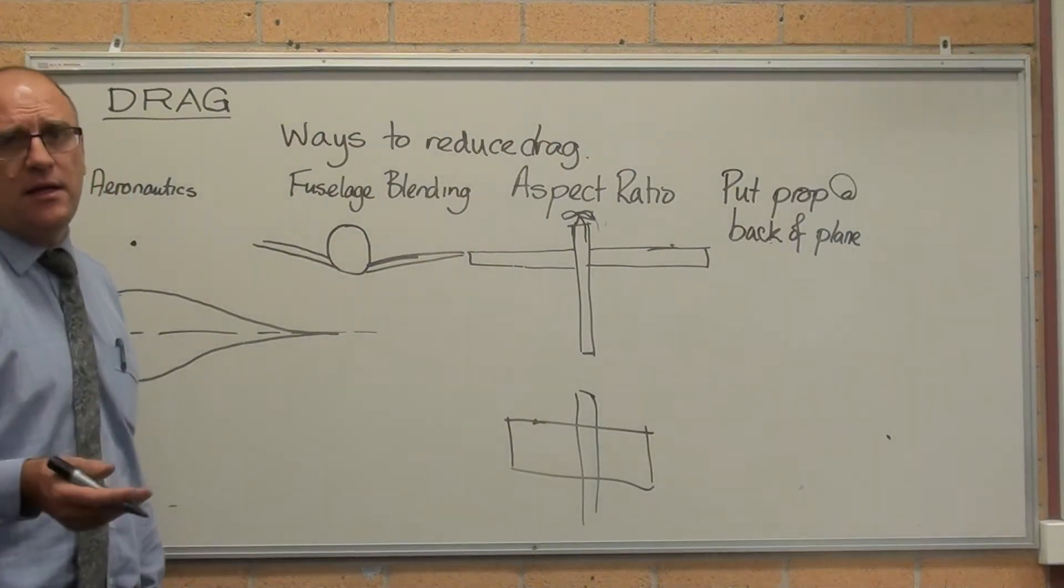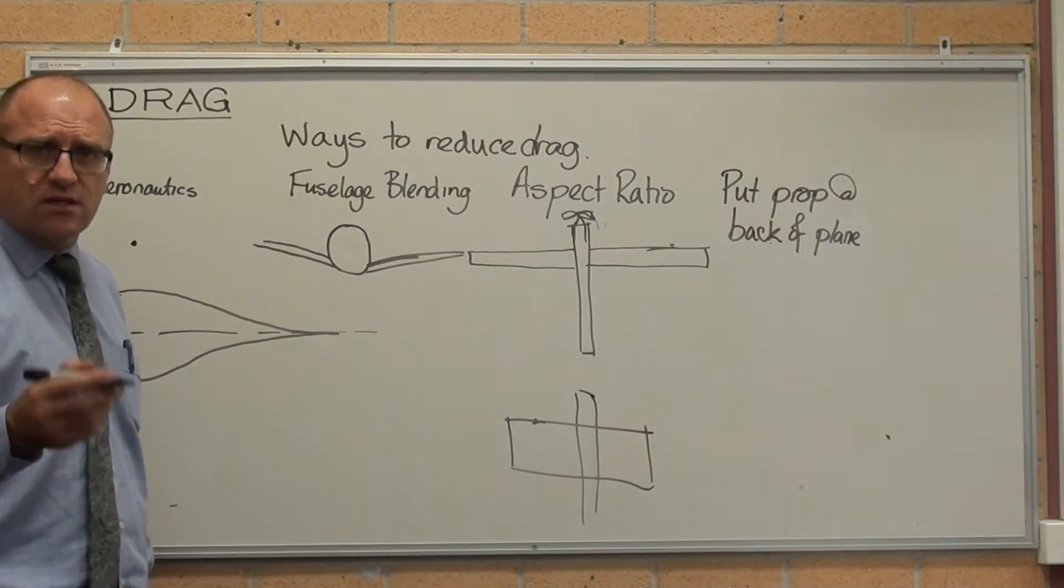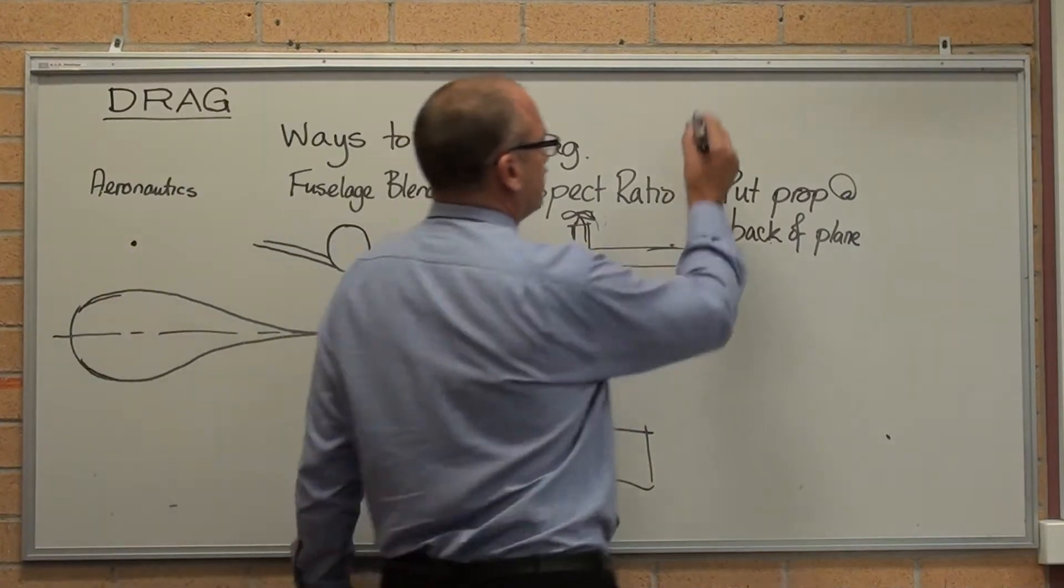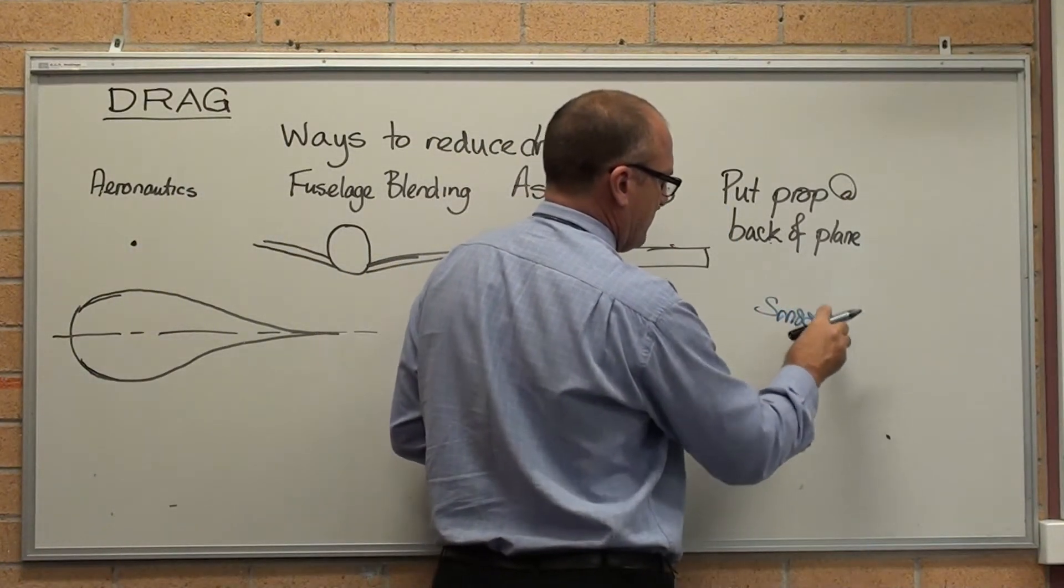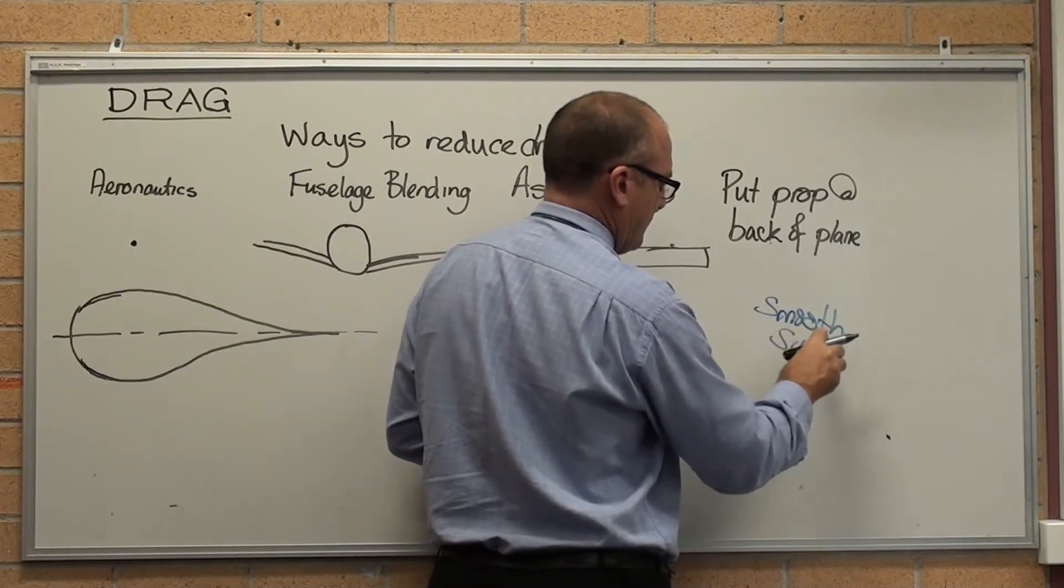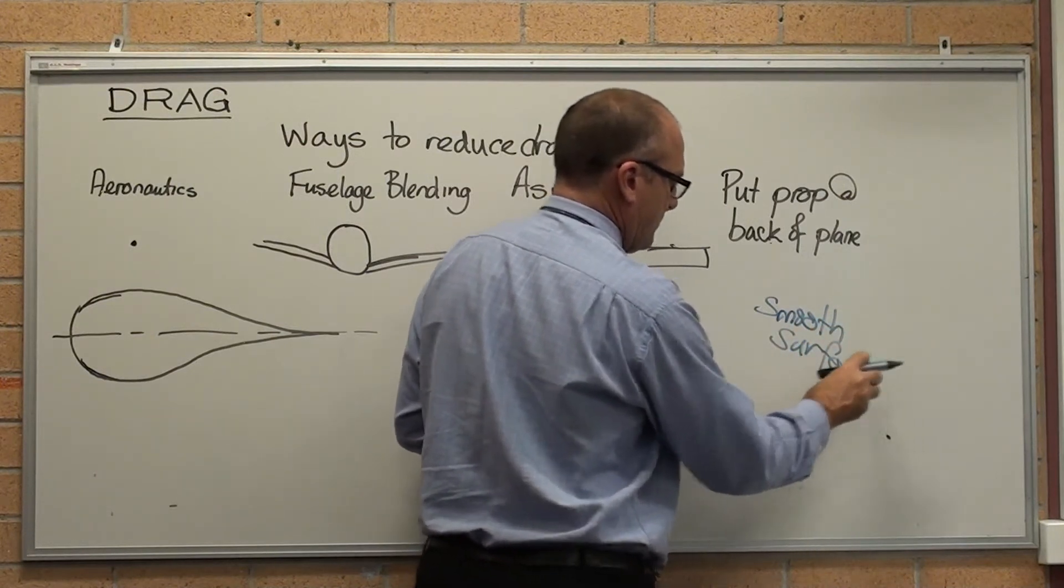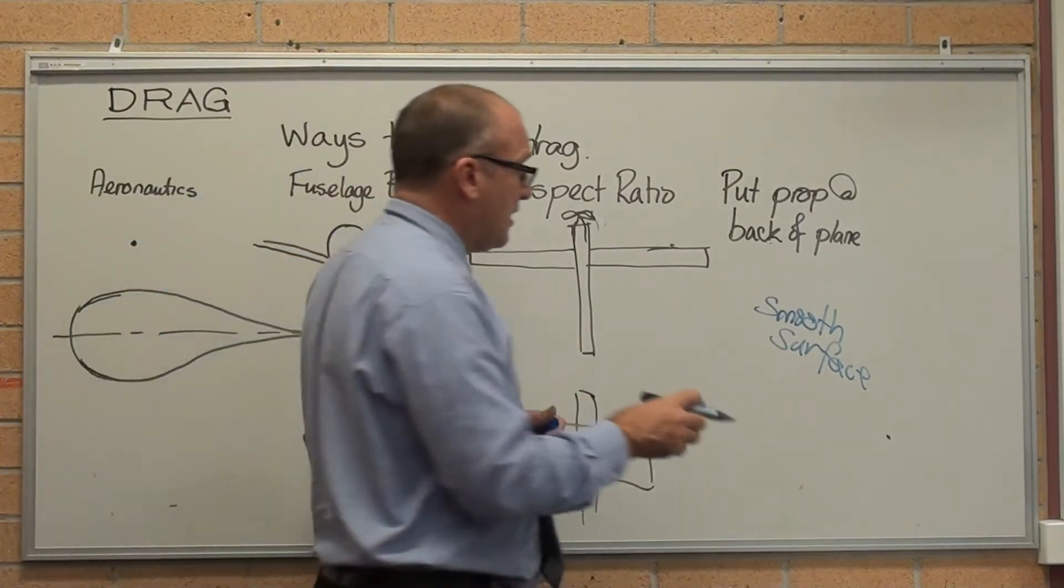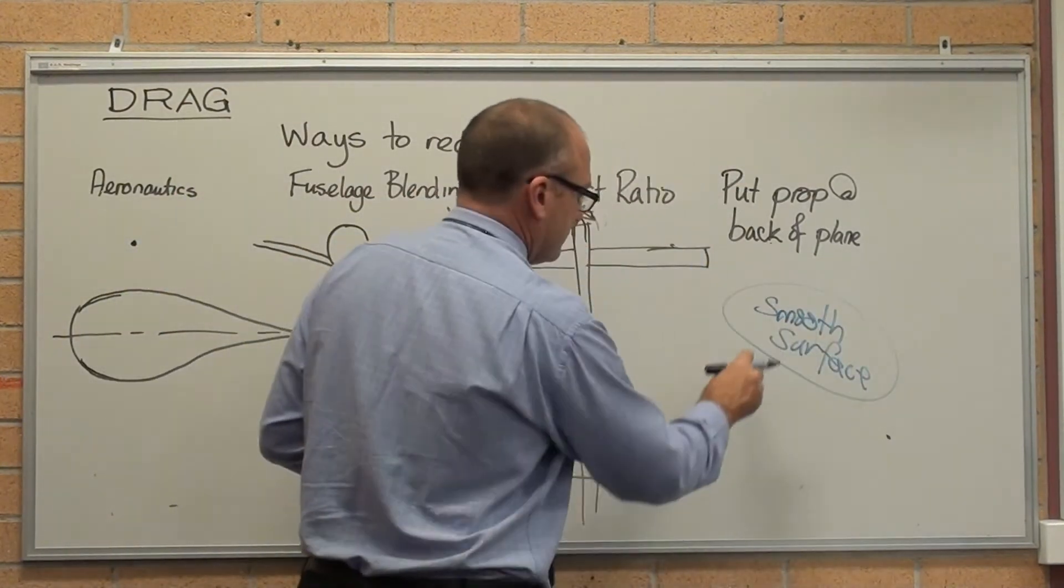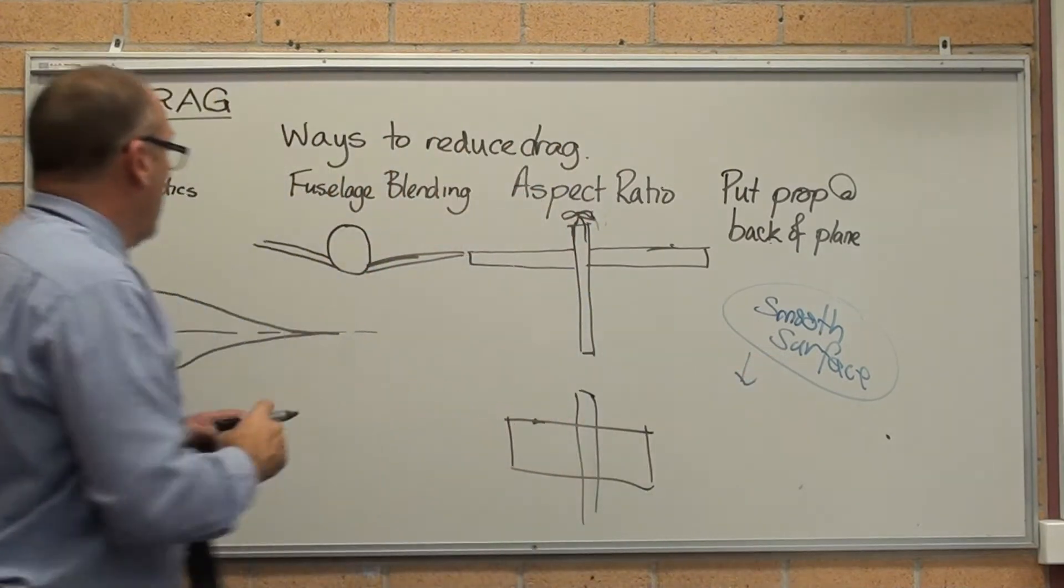Ways to reduce drag? Here's a few. There's lots of obvious ones. Here's smooth surface. Here's the one I haven't mentioned there, just to reduce the boundary layer drag. Other ways.